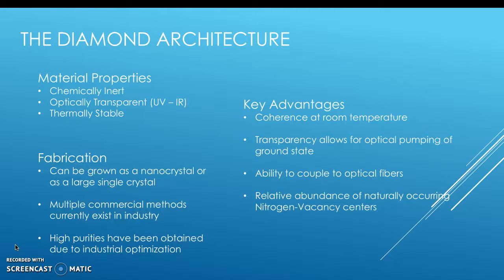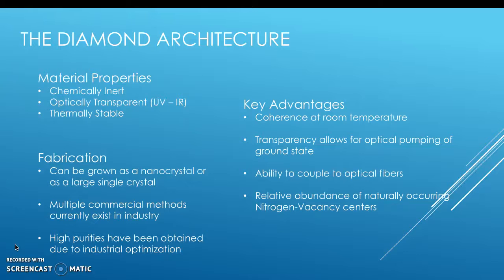The diamond architecture is great overall because diamond has advantageous material properties. It's chemically inert, it's optically transparent, and it's thermally stable. It also has multiple commercial and industrial fabrication methods which have allowed for optimization and creation of high purity diamond for quantum optical research. The key advantages are coherence at room temperature, transparency which allows for optical pumping of the ground state, the ability to couple to optical fibers, and relative abundance of naturally occurring color centers such as nitrogen vacancies.